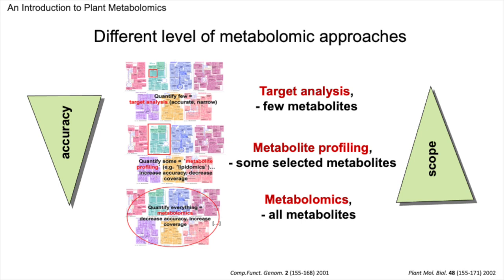Target analysis offers a sharp, clear view, but of a very small area. Then we expand our view to metabolite profiling. Here we're still in the realm of specifics, like lipids, for instance, but we're looking at a broader group. Think of it as zooming out a little — we lose some sharpness, but we start to see how these pieces fit into larger patterns. Finally, there's the wide-angle lens of metabolomics, where we observe all metabolites in a sample. This panoramic perspective trades a bit of detail for the ability to see the whole landscape — it's less about a single tree and more about the entire forest.